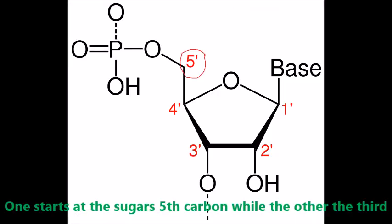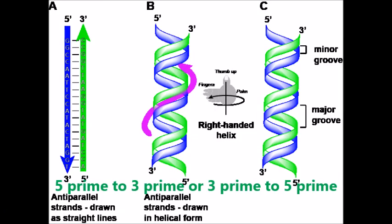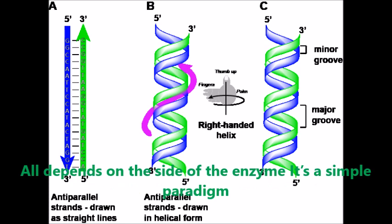Facing in opposite directions, one starts at the sugar's fifth carbon while the other at the third. Five prime to three prime, or three prime to five prime - all depends on the side of the enzyme. It's an antiparallel paradigm.